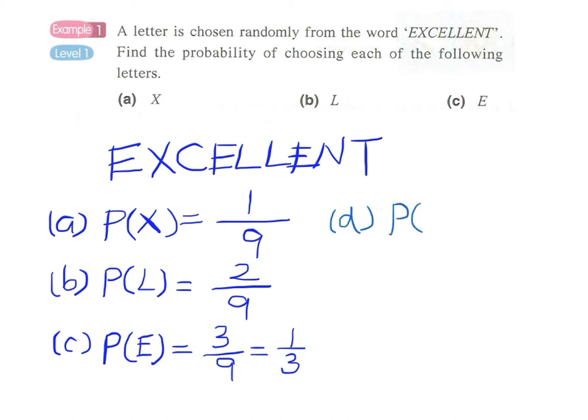Again, we have nine as the denominator. But can we find the letter A in the word 'EXCELLENT'? Actually, there is no A. So the numerator will be zero. This will be zero over nine, and the probability becomes zero. We call this kind of event...